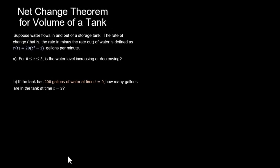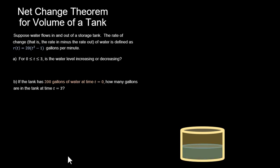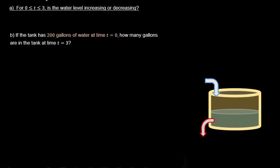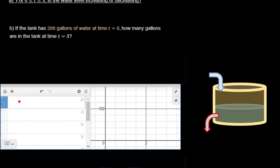So basically, if we want to kind of draw this out, we have a tank. It initially has some water in it. And water is either pouring in the tank or water is pouring out of the tank. So that's our basic setup. And let's first take a look at part A. For t between 0 and 3, is the water level increasing or decreasing? And this is pretty easy to see by plotting out this rate function provided up here.